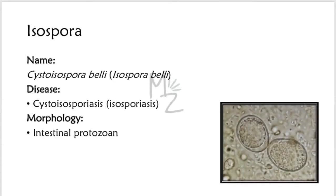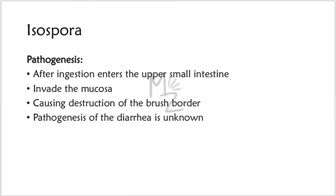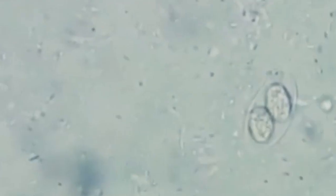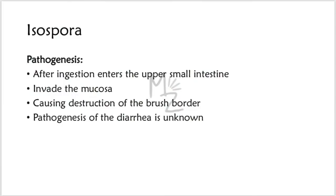Isospora. Its full name is Cystoisospora belli, also known as Isospora belli. It is responsible for cystoisosporiasis or isosporiasis, and it is an intestinal protozoan. Epidemiology: It primarily affects immunocompromised patients, such as those with AIDS. Its life cycle parallels that of other members of the coccidia. Transmission occurs via the fecal-oral route. Pathogenesis: After ingestion, cysts enter the upper small intestine, invade the intestinal mucosa, and cause destruction of the brush border. The mechanism of diarrhea is unknown.